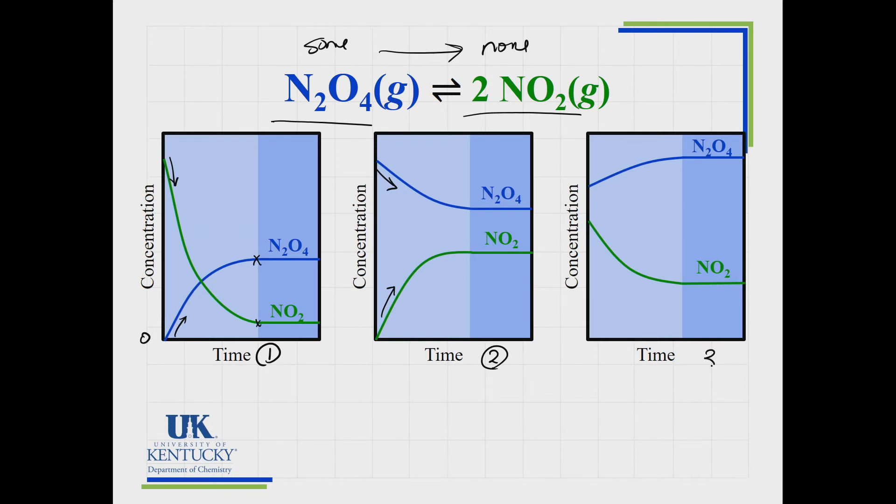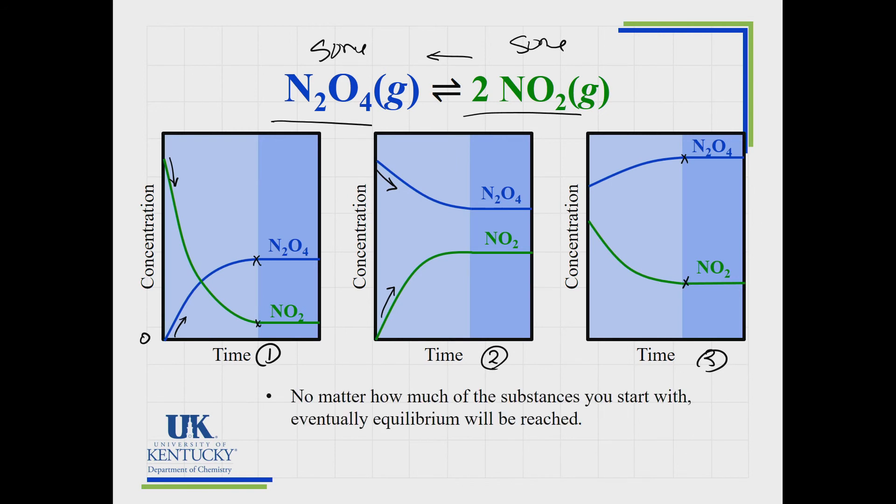In number three, we started with a scenario where we've got some of this and some of that. Which one happened first? Which one's going up? We're getting more N2O4. So it's starting off by going this way a little bit more than the other direction, but eventually it gets to the point where the forward reaction and the reverse reaction are happening at exactly the same rate. So no matter how much you start with, whether it's all of the N2O4 or you're starting with some of both, eventually equilibrium will be reached.